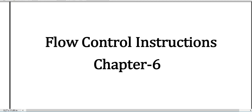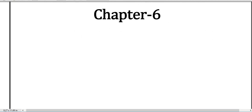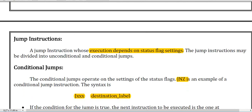Hello everyone, today we are in Chapter 6 of the 8086 microprocessor. Today our topic is flow control instructions. First we have the jump instruction — a jump instruction whose execution depends on the status flag settings.